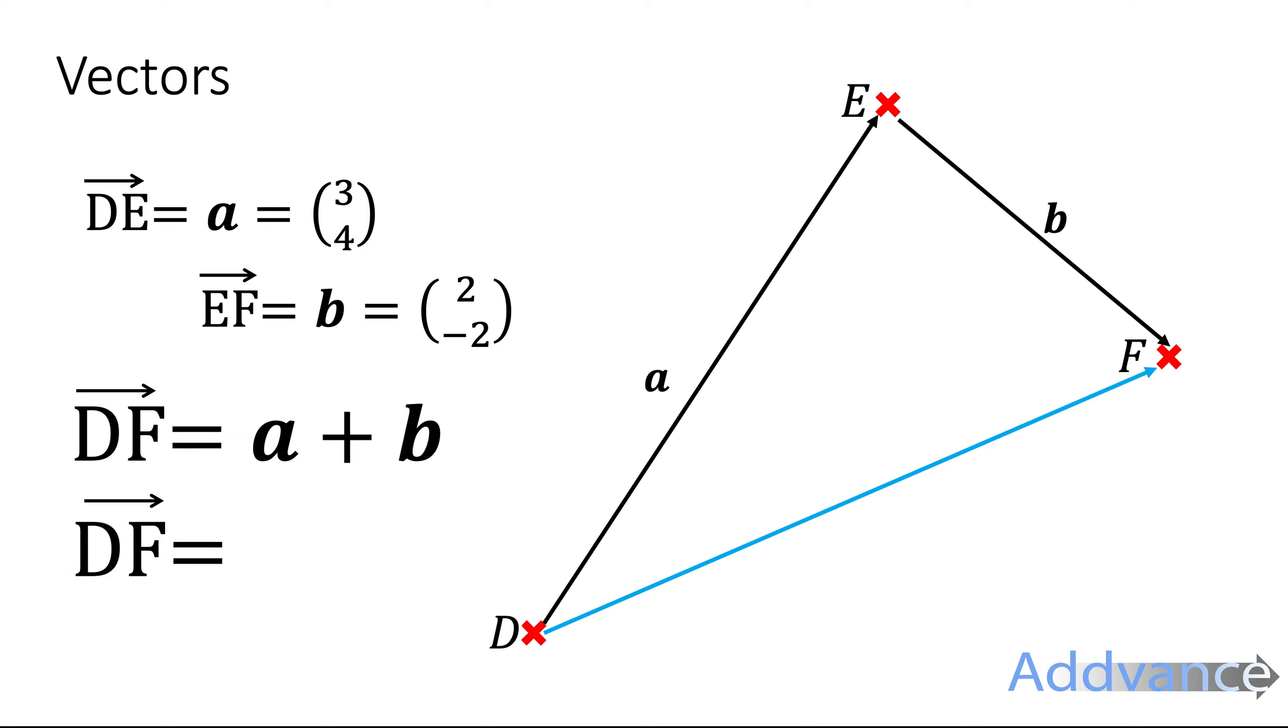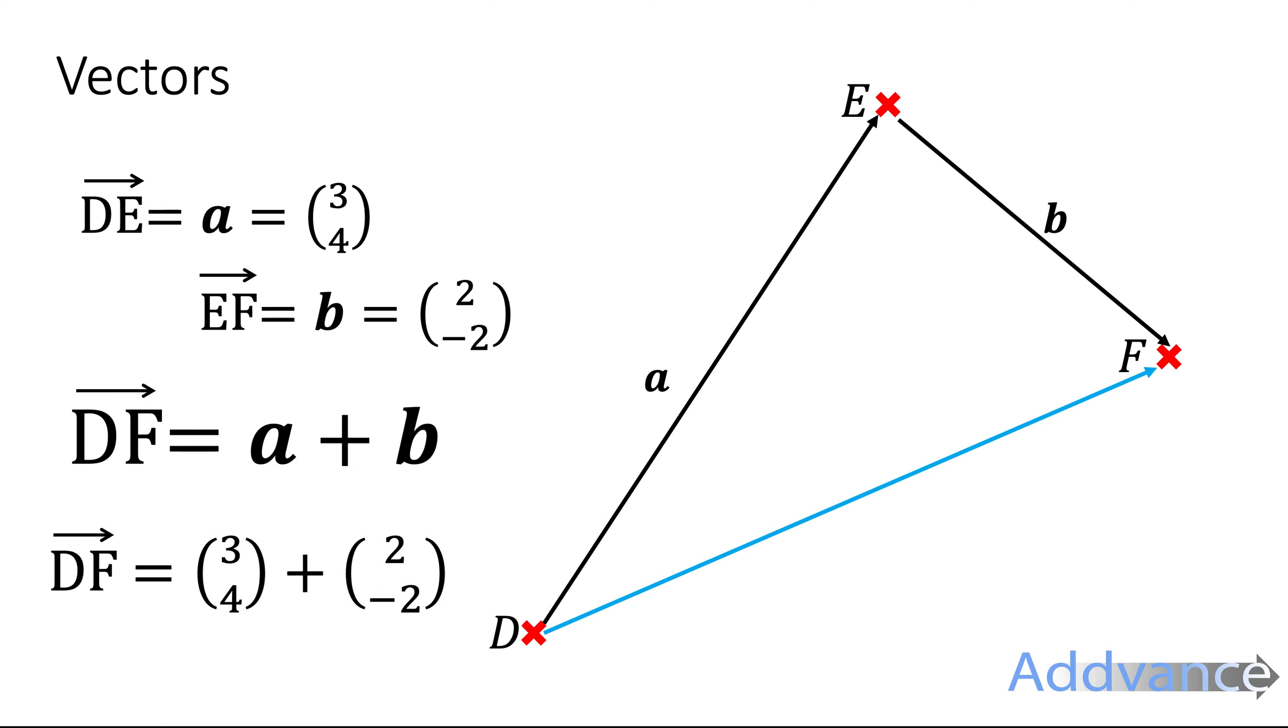We can also write it as a column vector where we substitute in a is (3,4) and b is (2,-2) like this. Three plus two is five, four plus minus two is two. The vector D to F is five across, two up.